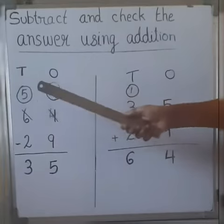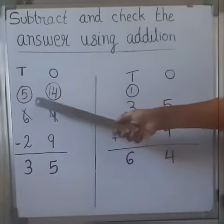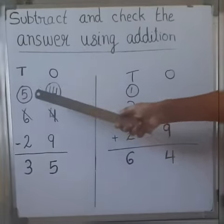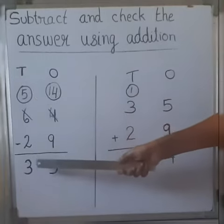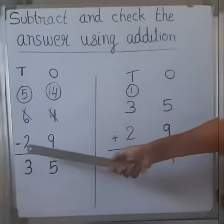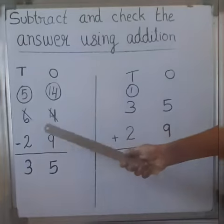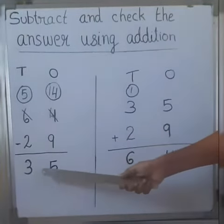Here only 5 is left because 1 was taken from there. 5 minus 2, we are getting 3. The answer after subtracting 29 from 64 is 35.